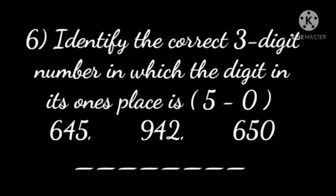Next, number 6. Identify the correct 3-digit number in which the digit in its ones place is 5 minus 0. So, here 3 options have been given. You will choose the right one.